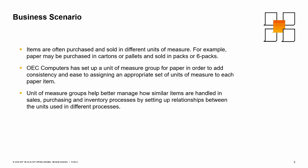Items are often purchased and sold in different units of measure. For example, paper may be purchased in cartons or pallets and sold in packs or six packs. The company has set up unit of measure groups in order to add consistency and ease to assigning an appropriate set of units of measure to each item. An item's assigned unit of measure group will contain all the different units that the item needs in purchasing, sales, and inventory.